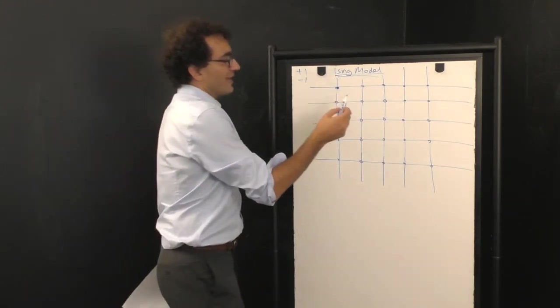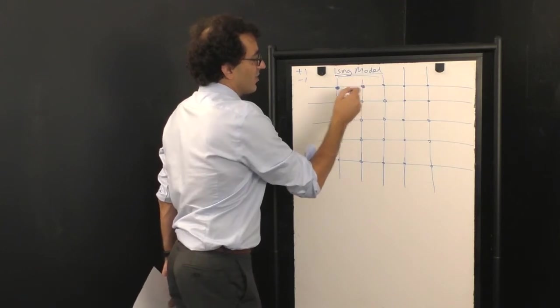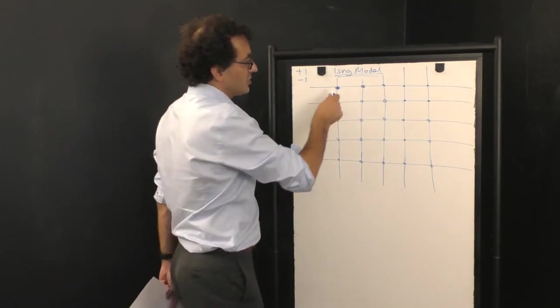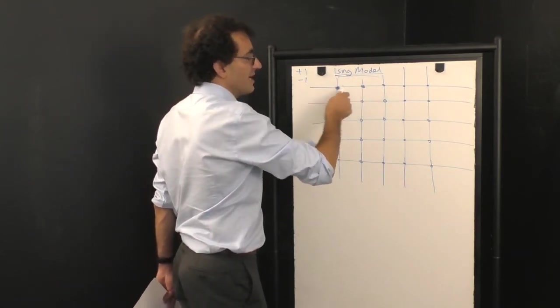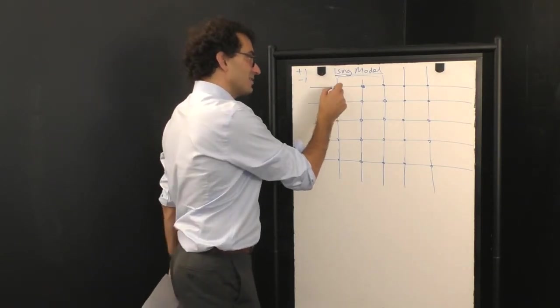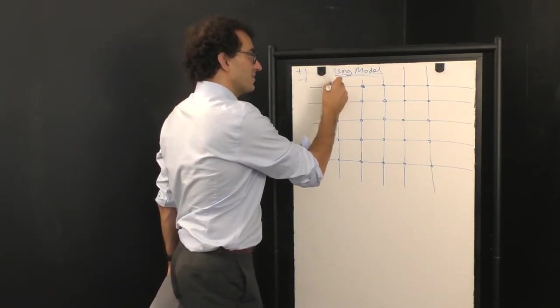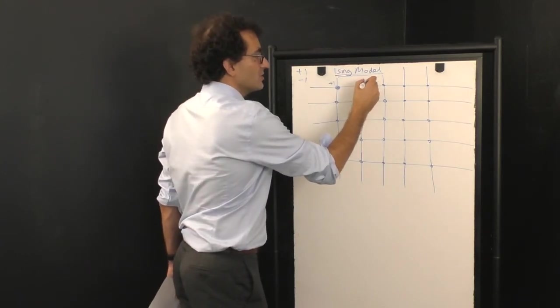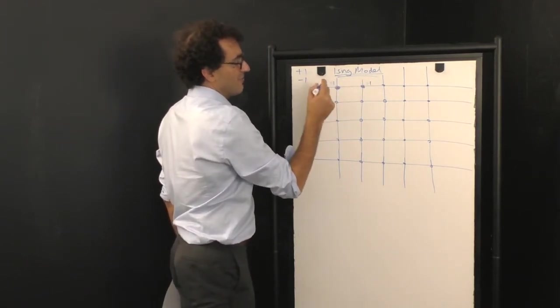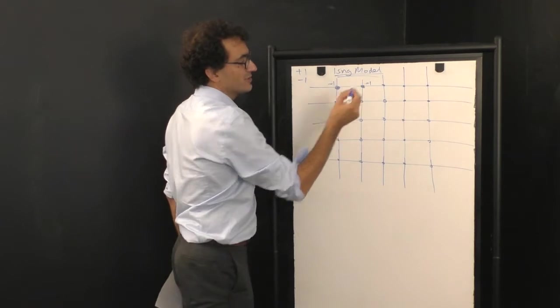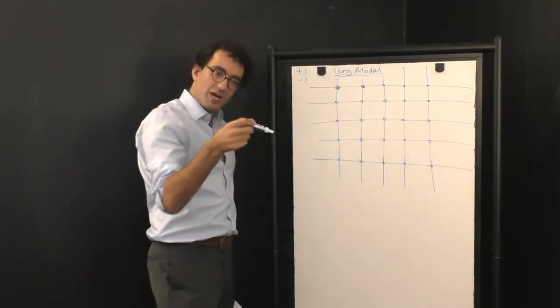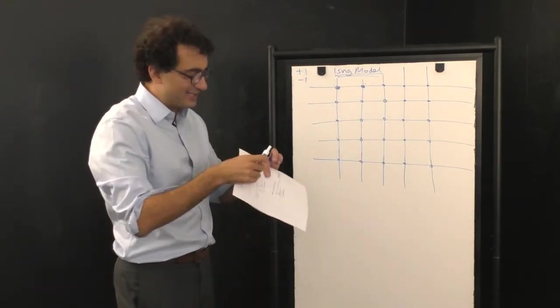In the Ising model what happens is that atoms that are on two neighboring parts of the lattice, graph theoretically two neighbors connected by an edge, or two nodes connected by an edge. If this one is in the plus one state, this atom here will also want, quote unquote, to be in the plus one state. And similarly, if this one is in the minus one state, this one here will also desire to be in the minus one state. But there's no causal effects propagating through this system, at least not how the Ising model is usually defined.